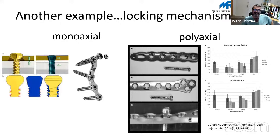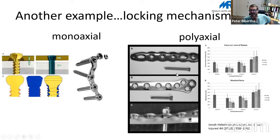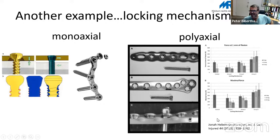Another example: locking mechanisms. Locking screws came up about 25 years ago. On the left-hand side you see mono-axial locking mechanisms, and on the right-hand side poly-axial locking mechanisms. You might think that all types of poly-axial locking mechanisms give the same strength, but this is not true — there is a really significant difference between the load and failure power needed to dislocate screws in these three types of implants.